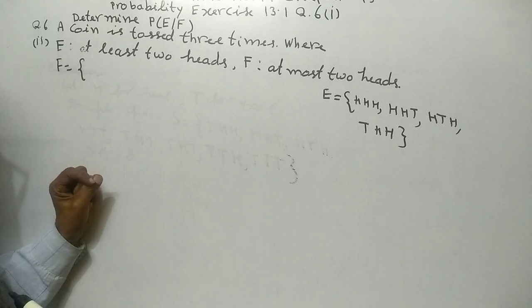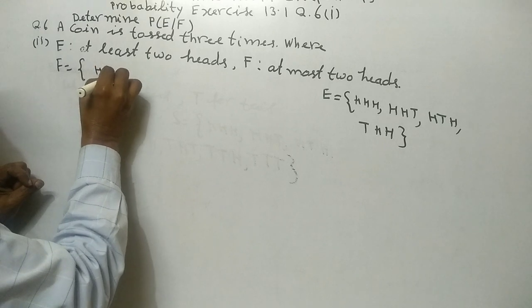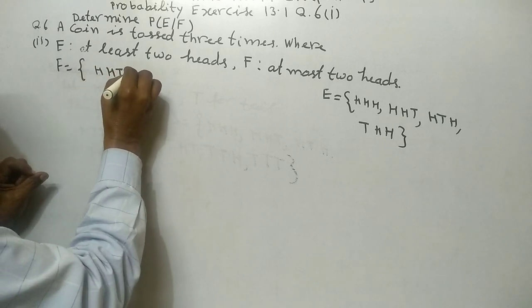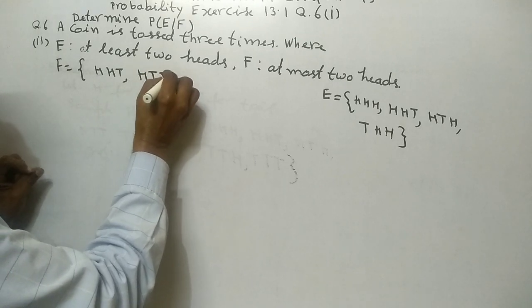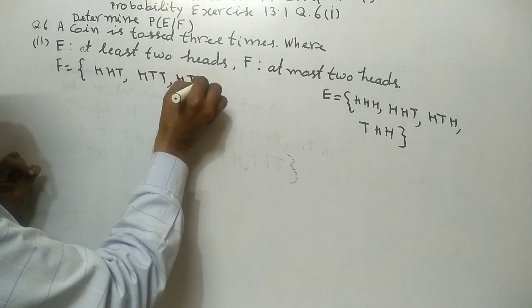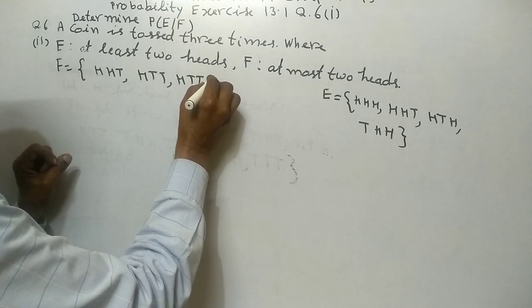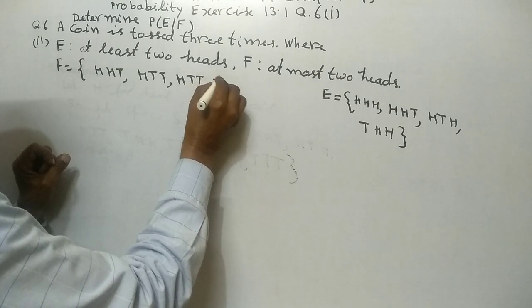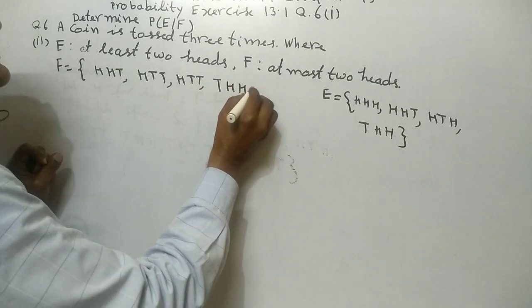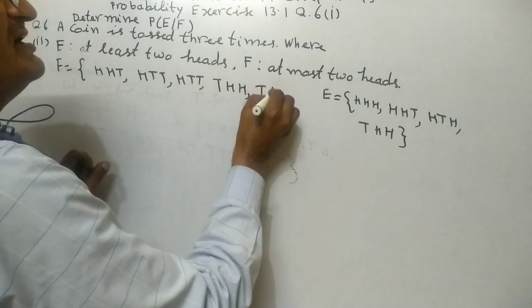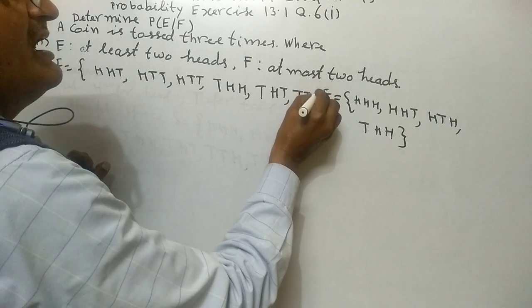F equals at most two heads. So HHT, HTH, HTT, THT, THH, TTH, TTT.